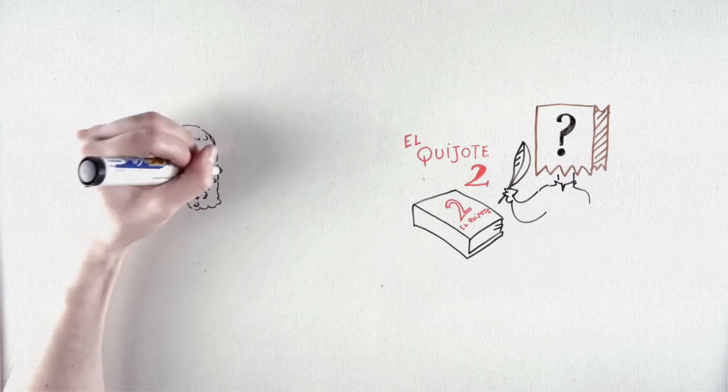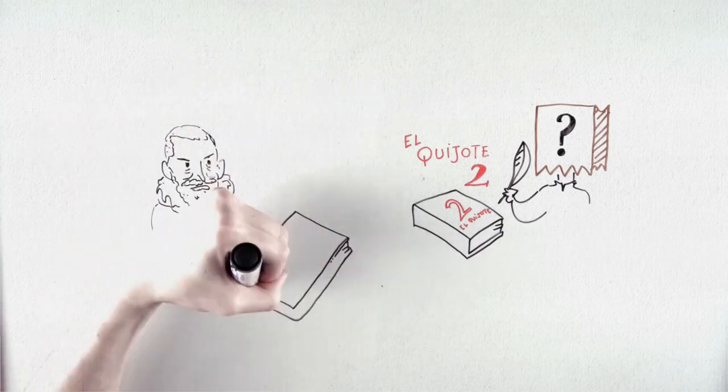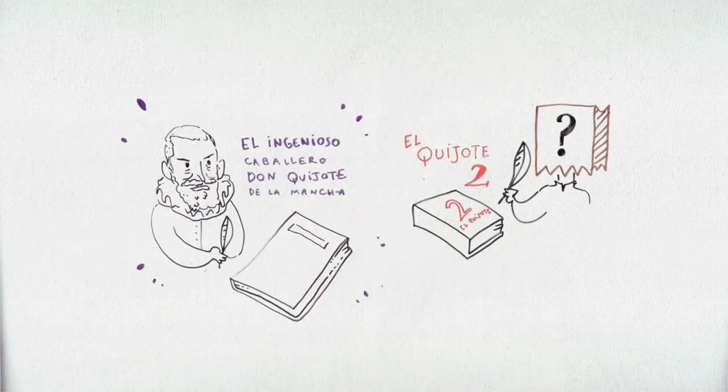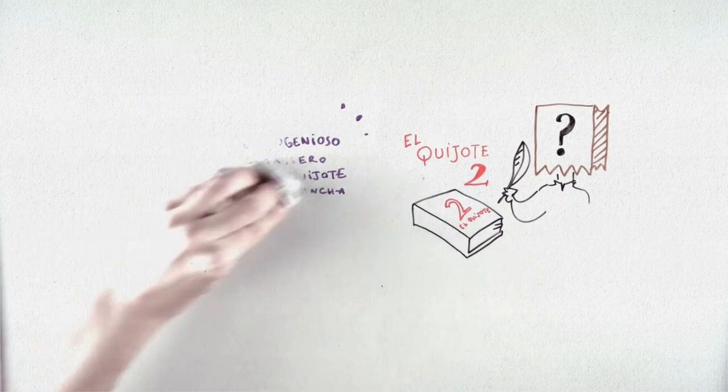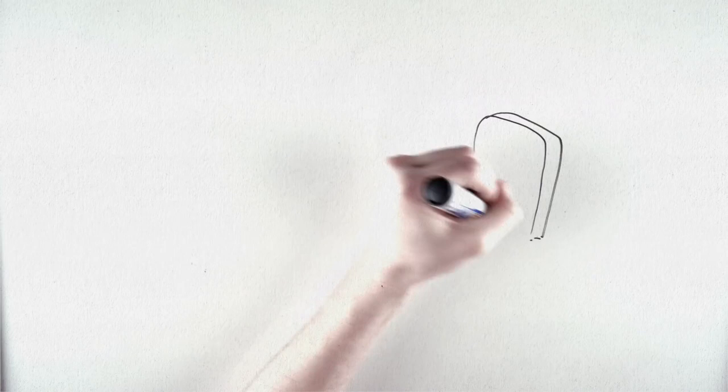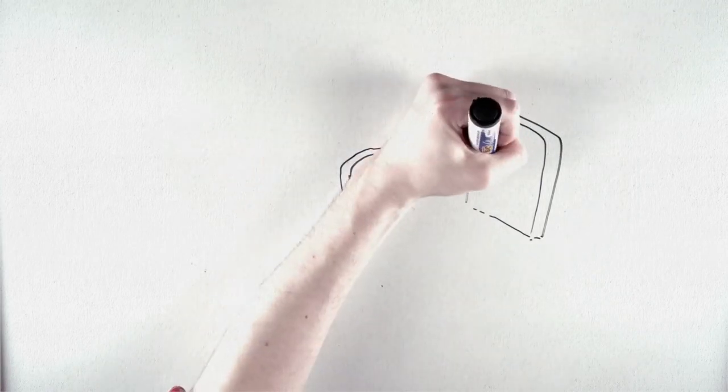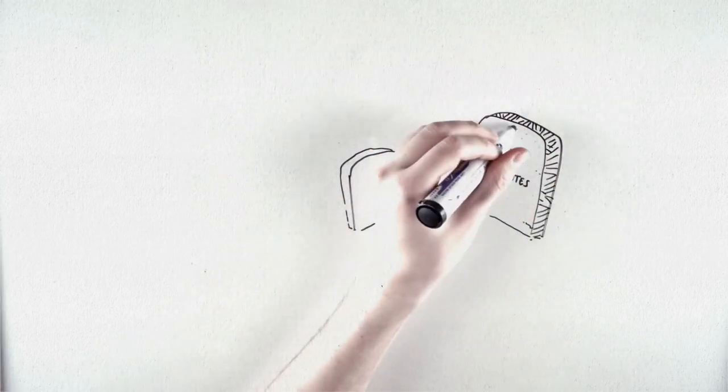One month before his death, he published the genuine second part of Don Quixote. Cervantes exhaled his last breath and passed into history as one of the greatest authors, who would be buried on April 23rd, 1616.